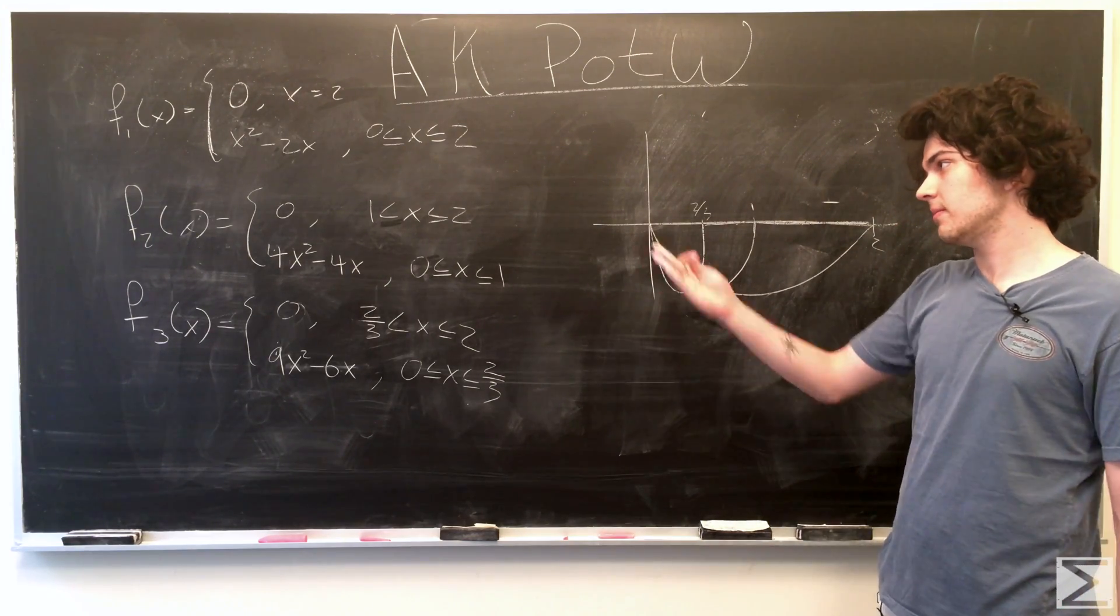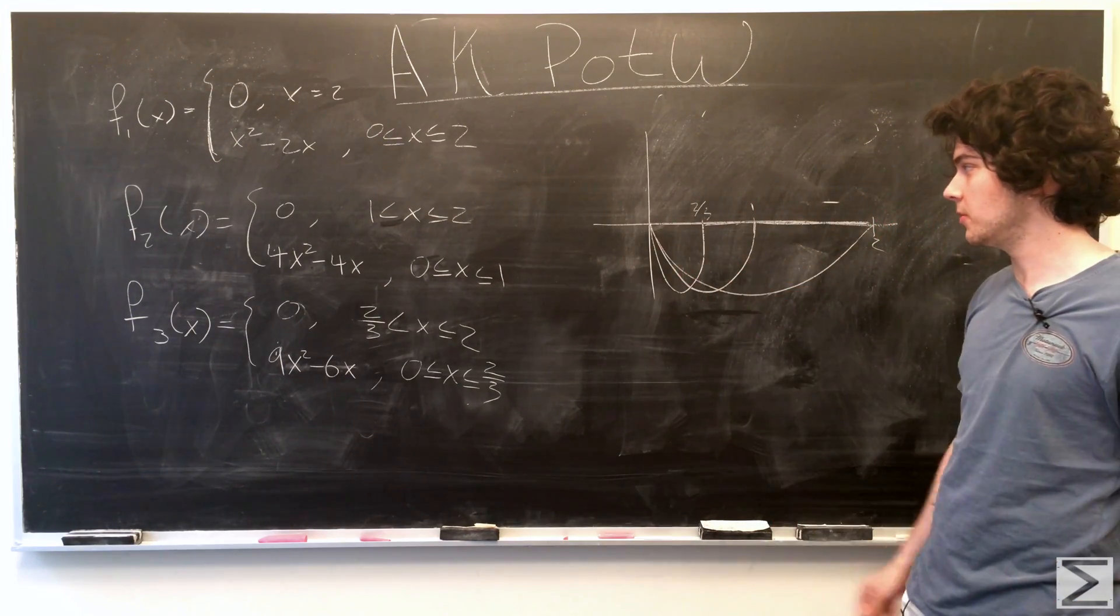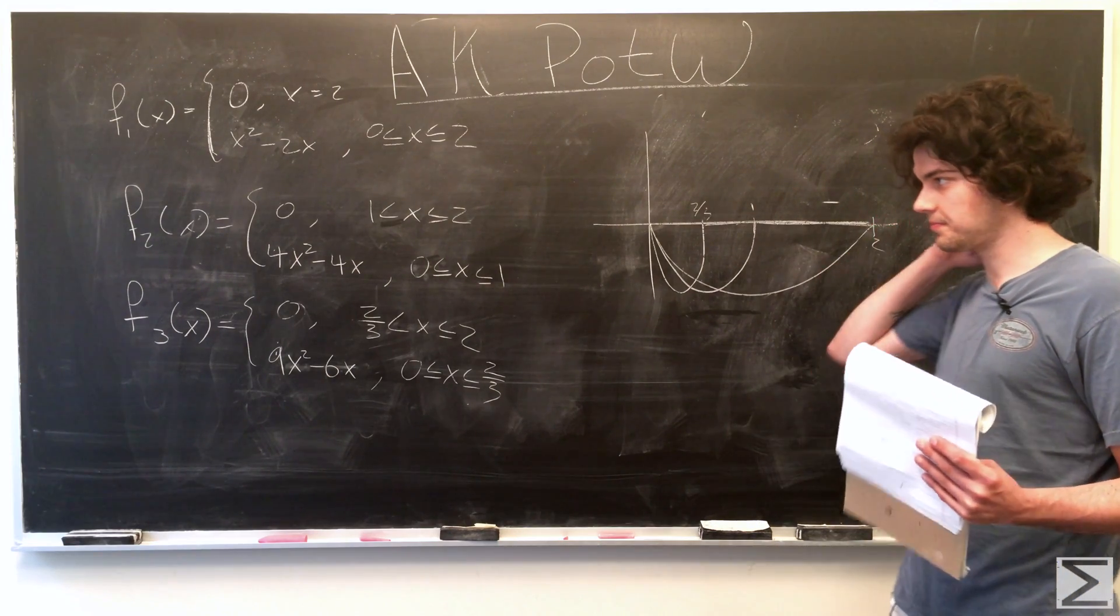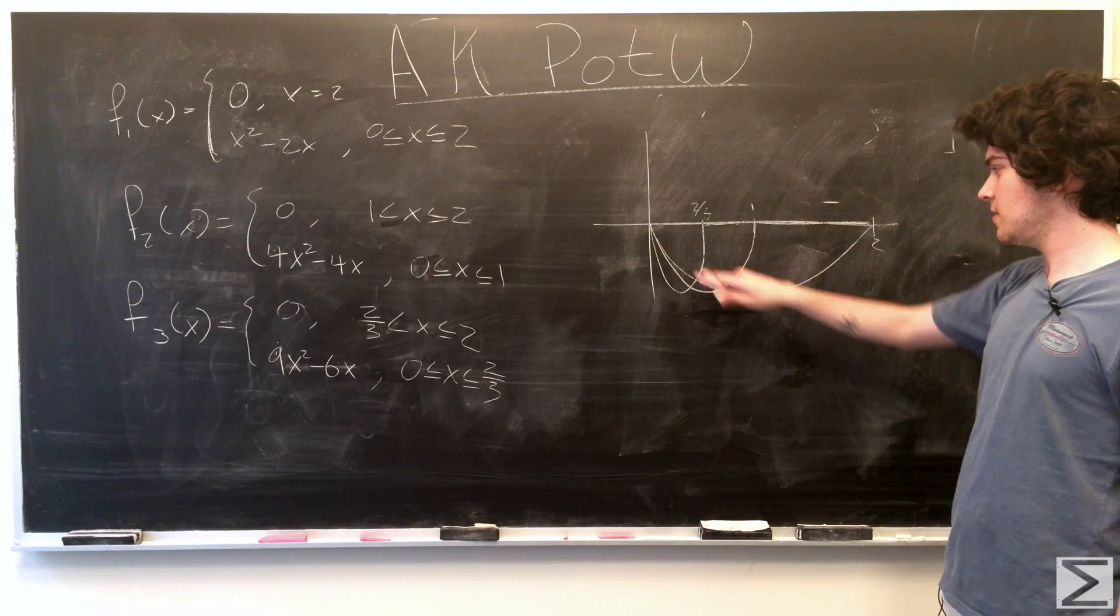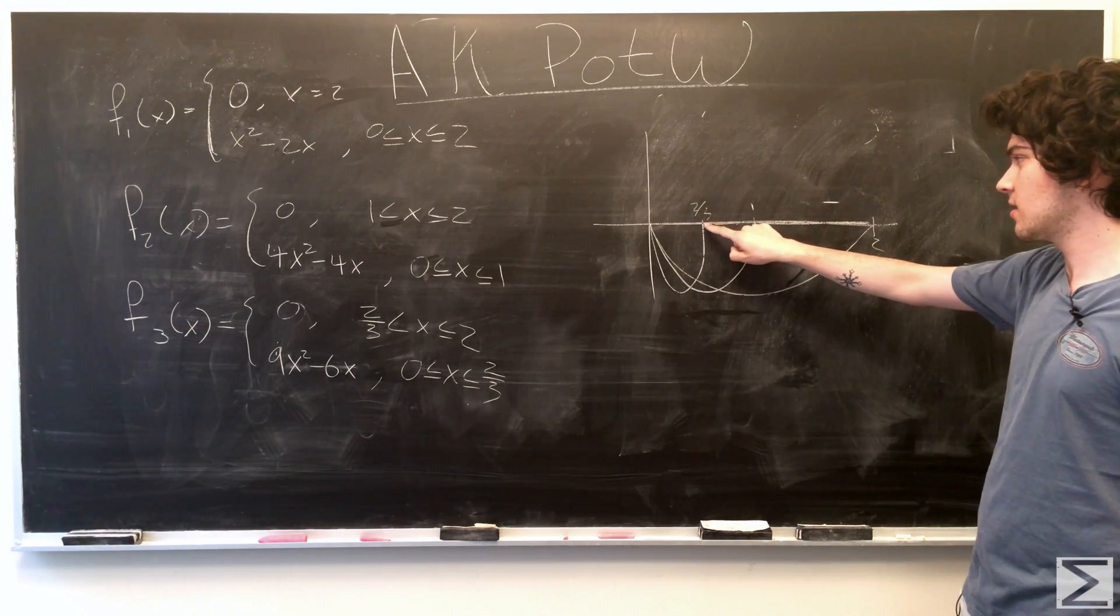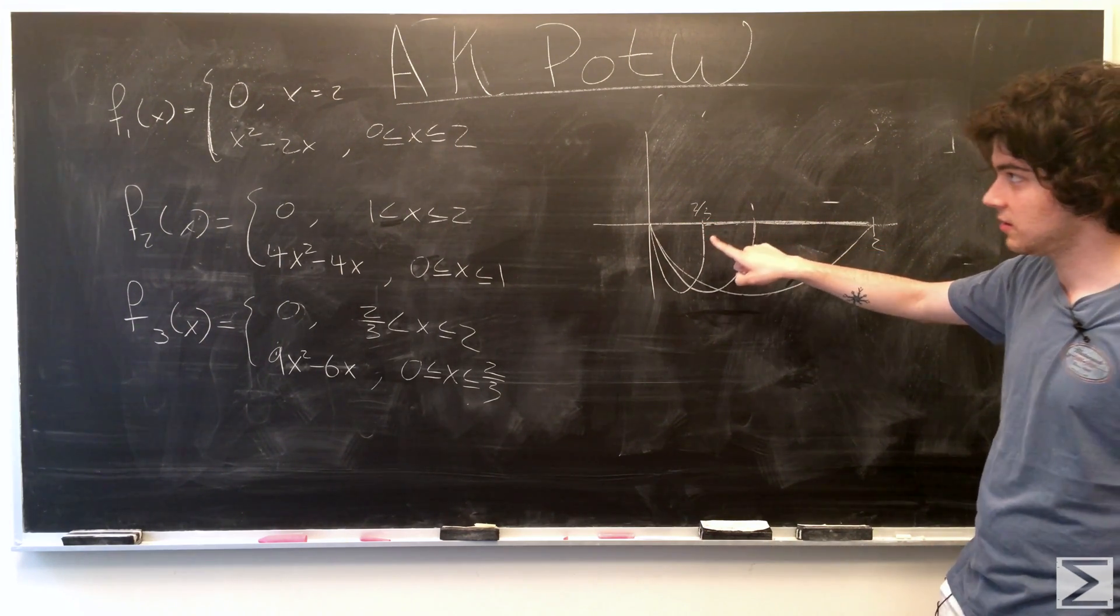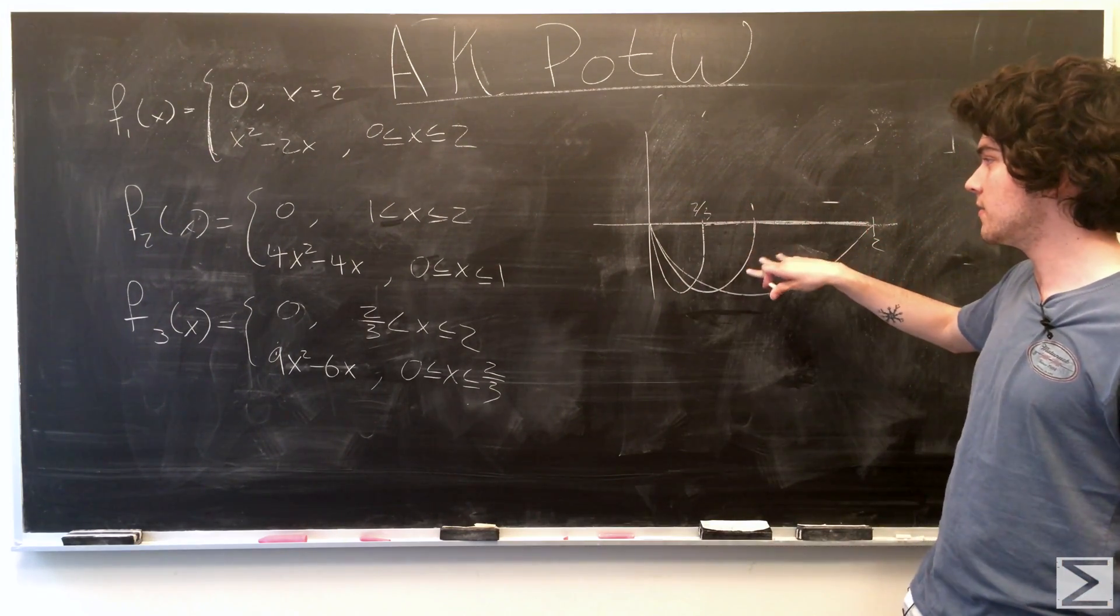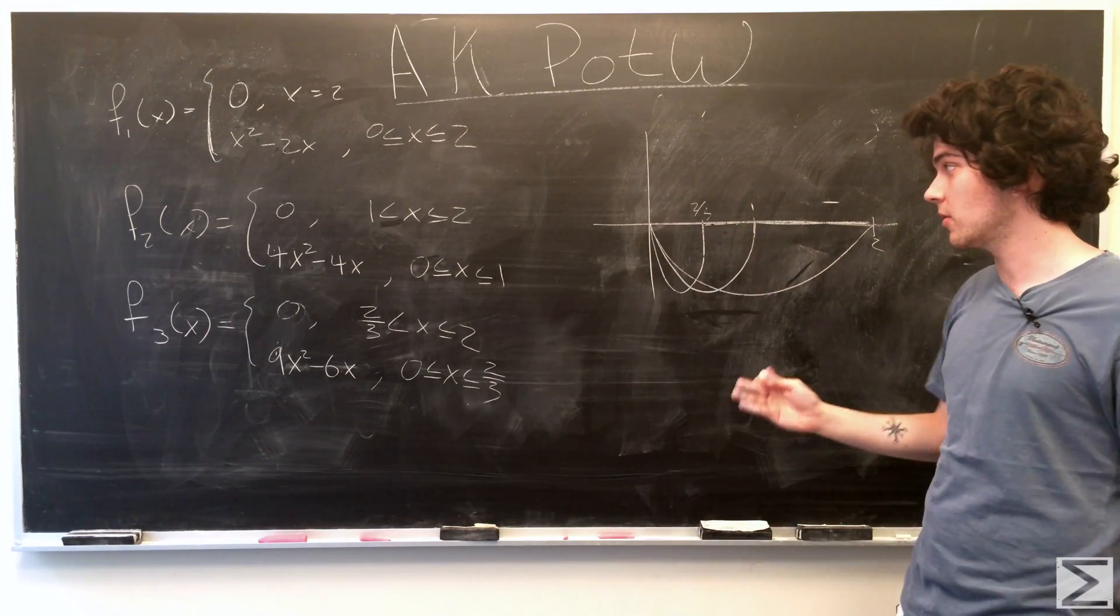You can graph these or parse together what's going on with our sequence through just the formulas, and the formulas will be helpful when determining the uniform convergence. As we can see, we have these parabolas facing upwards, and they get cut off when x is greater than 2 over n. So, the cutoff points are going to approach 0.